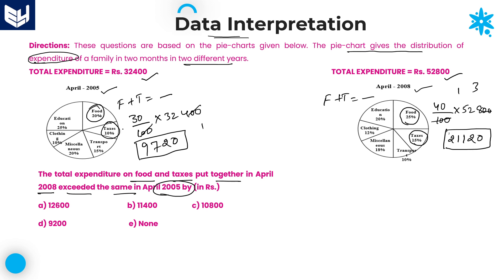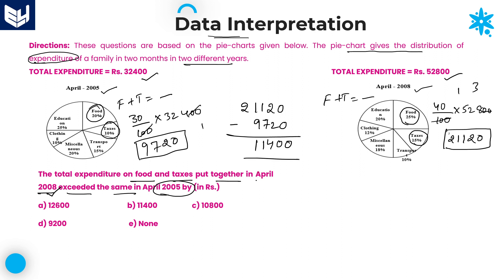Whereas in 2005, food and taxes together is 9,720. The question asks how much 2008 exceeded 2005 — which is the difference between those two: 21,120 minus 9,720. Working through the subtraction: 0 minus 0 is 0, 2 minus 2 is 0, 11 minus 7 is 4, 10 minus 9 is 1. That gives 11,400. So the difference between food and taxes in 2005 and 2008 is 11,400, which is option B — the right answer.